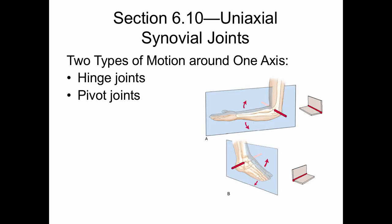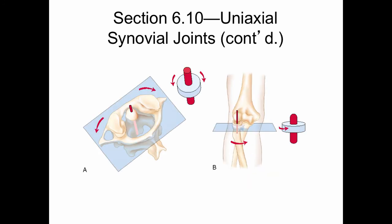A uniaxial synovial joint has two types of motion around one axis. Examples are hinge joints and pivot joints. A hinge joint is also known as a ginglymus joint, and a pivot joint is also known as a trochoid joint. Examples of uniaxial synovial pivot joints include the atlanto-axial joint and the proximal radio-ulnar joint of the forearm.